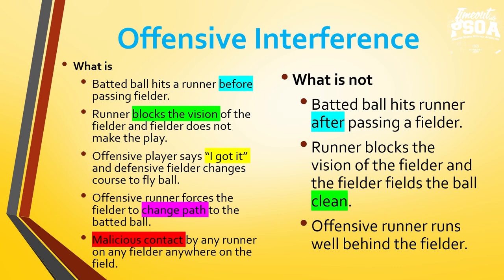What is not offensive interference? A batted ball hits a runner after passing a fielder — so the infield is in, and the runner is behind the first baseman. If that first baseman dives, it passes him, then hits the runner — that's not offensive interference. Runner blocks the vision of the fielder but the fielder fields the ball clean and gets the out — there was no hindering. So when you're talking about vision, don't call it right away; slow down and make sure it actually hinders and impedes the fielder. And if an offensive runner runs well behind or inside the first baseman catching a fly ball, they can run anywhere to avoid offensive interference.